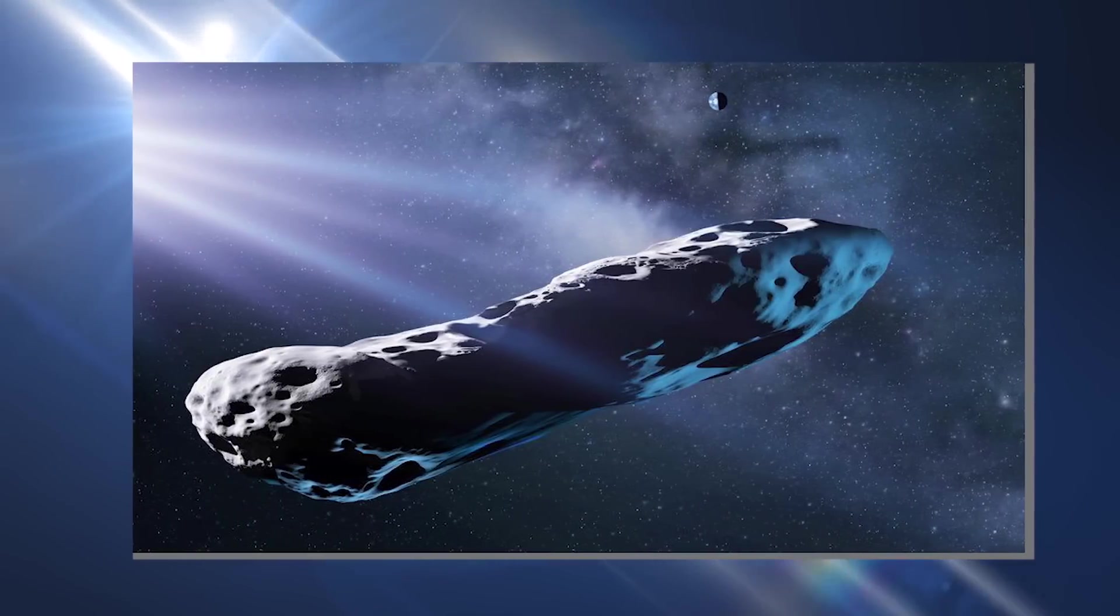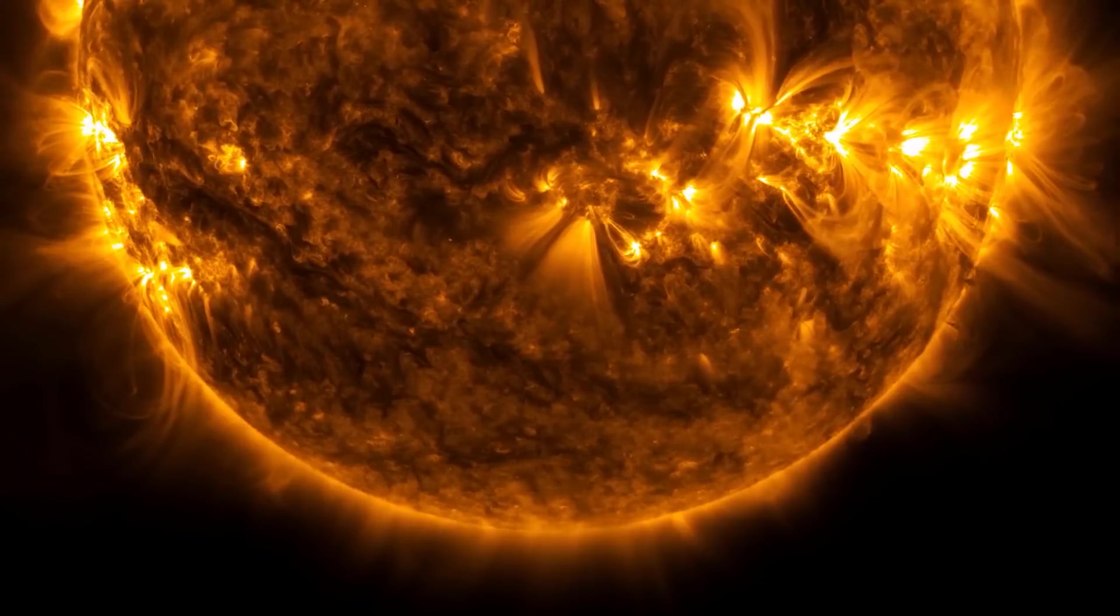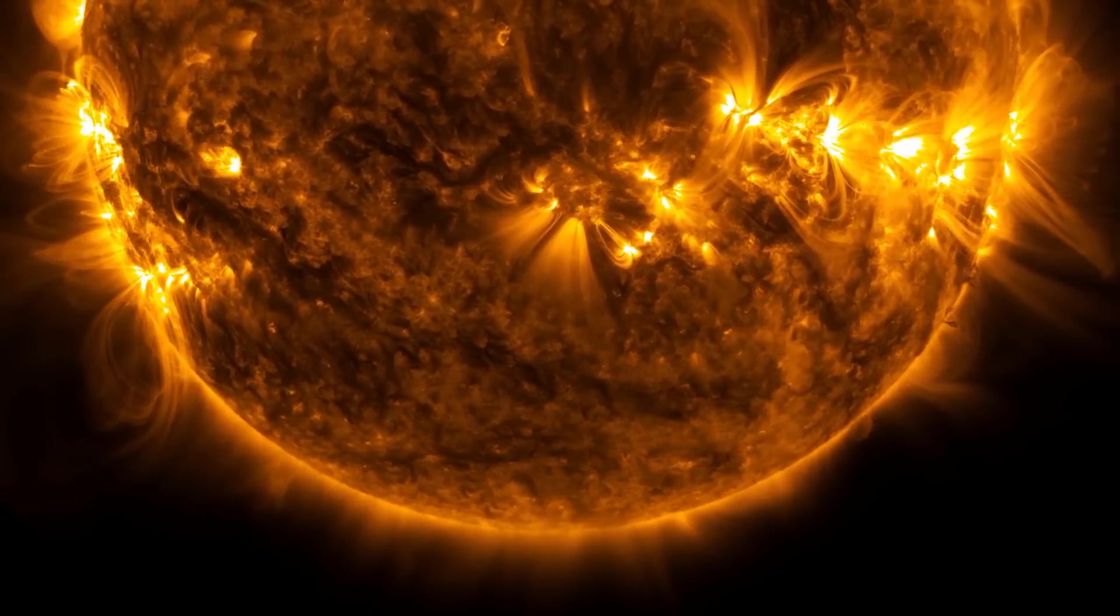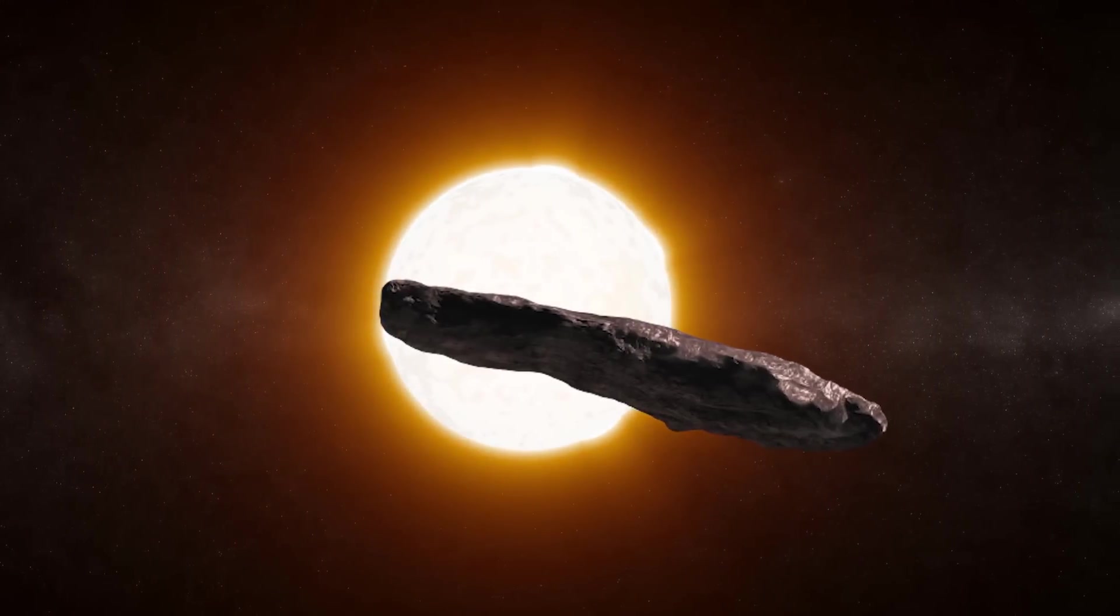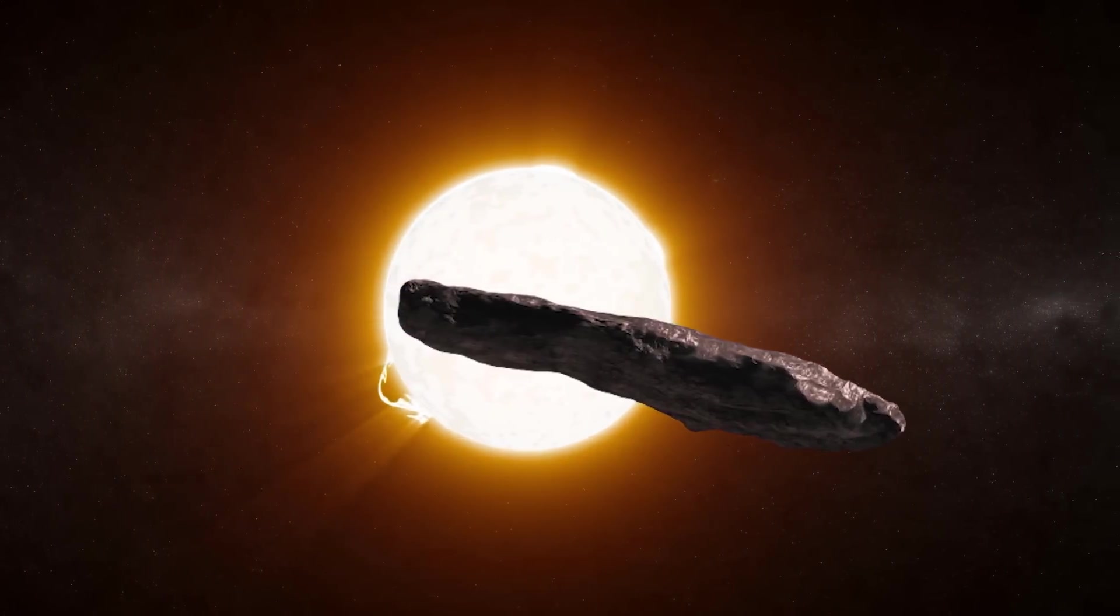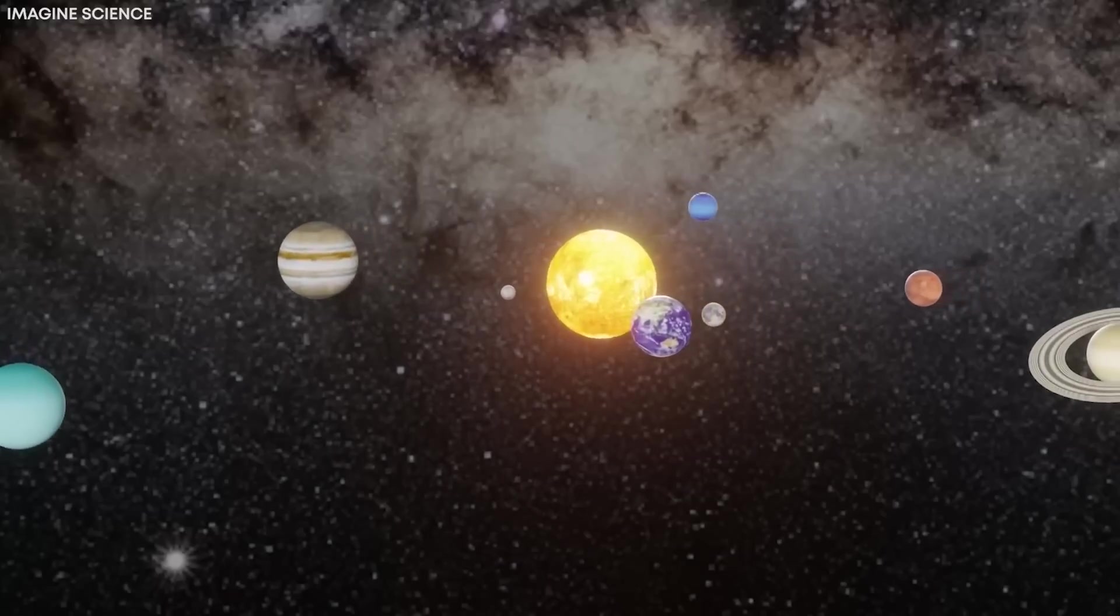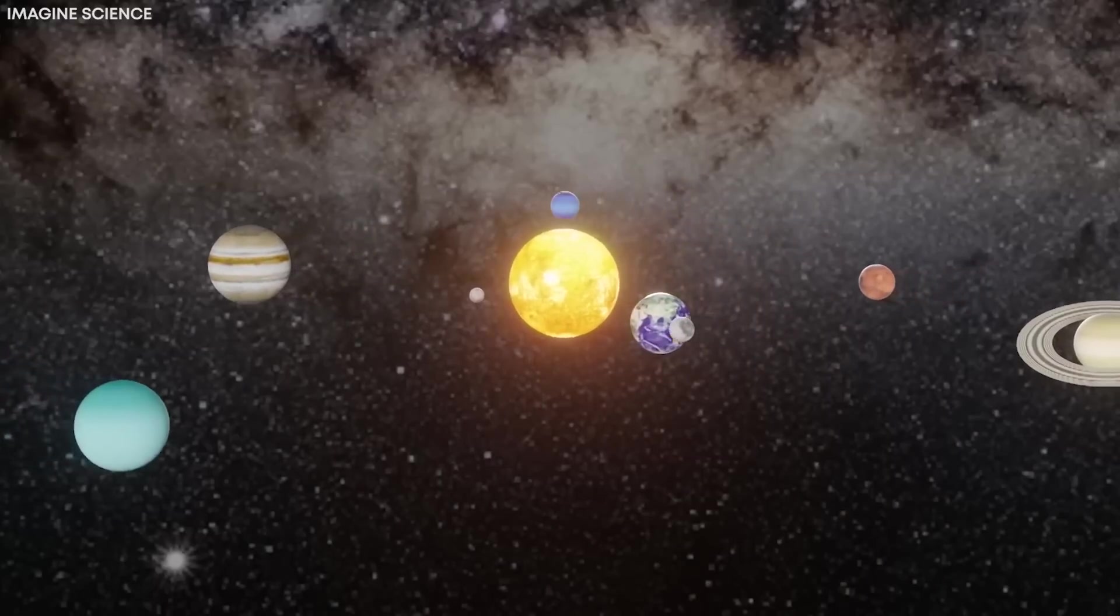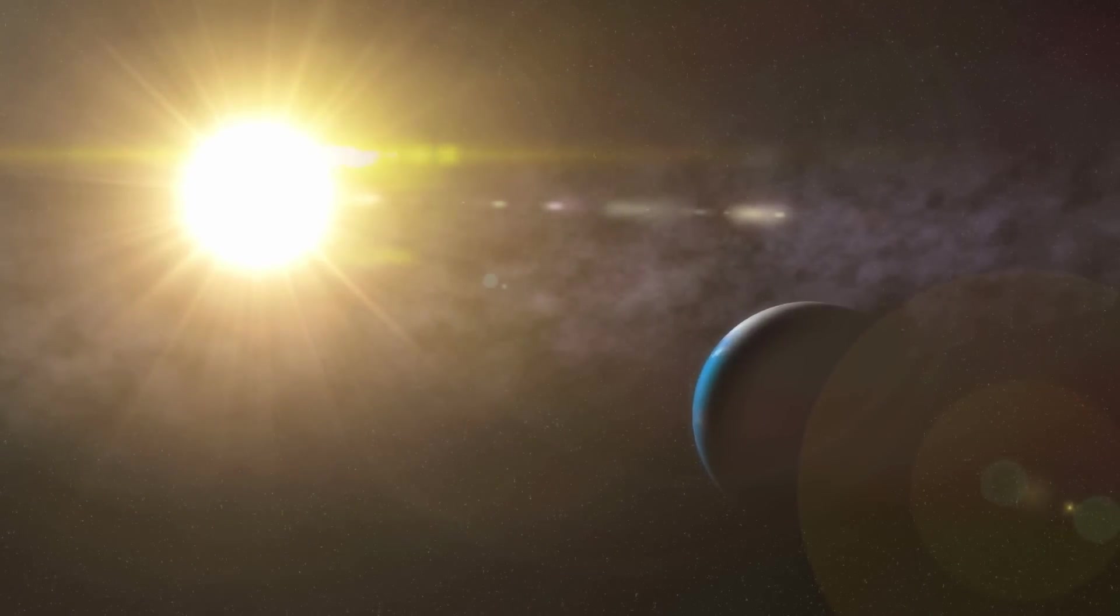Oumuamua's visit to the solar system was brief, and it moved too quickly to be captured by the sun's gravity. It made its closest approach to the sun, perihelion, on September 9, 2017, and then sped away from the solar system. Indeed, the object's peculiar characteristics and unexpected origin has puzzled astronomers ever since.